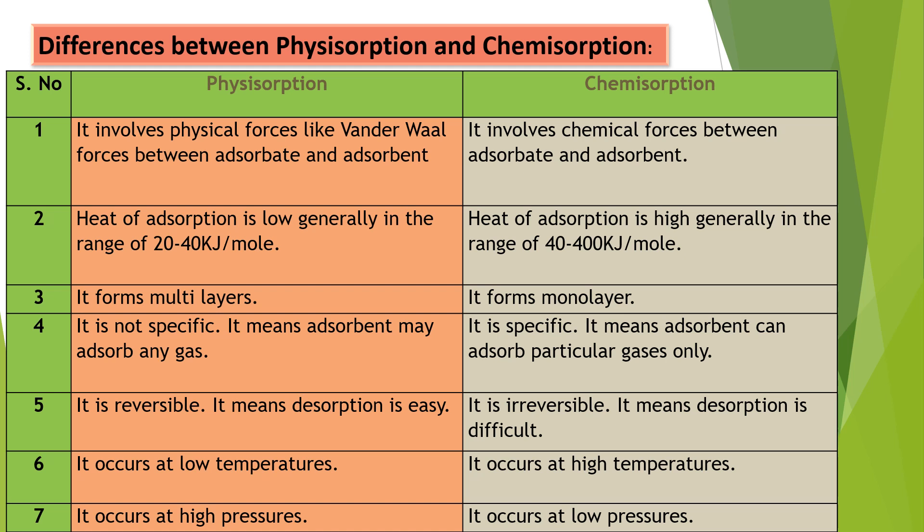The fifth difference: physisorption is reversible, meaning desorption — removal of adsorbate from the surface of the adsorbent — is easy. In chemisorption, it is irreversible, meaning desorption is difficult. The sixth difference: physisorption occurs at low temperatures and high pressures, whereas chemisorption occurs at high temperatures and low pressures.